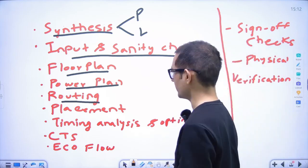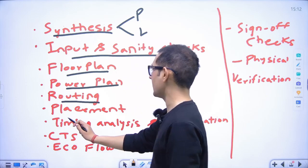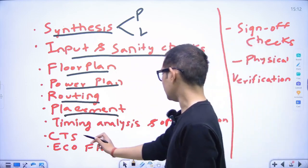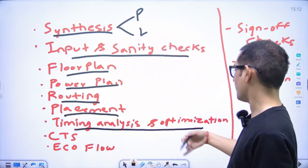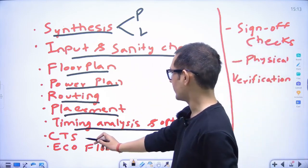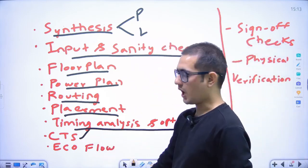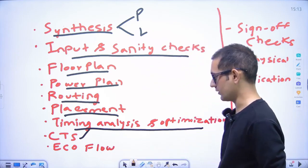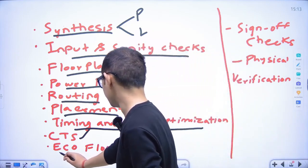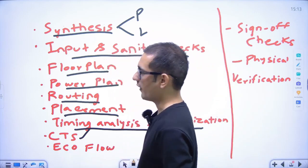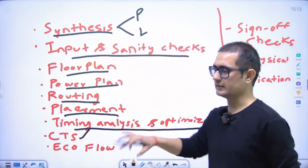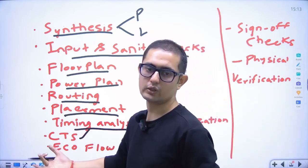Placement you should know with very practical knowledge. Then timing analysis and optimization techniques you should know. Then CTS — clock tree synthesis — how we distribute the clock to different components in an optimized manner. Then ECO flow — if there are any changes in the design, how we will implement those changes.